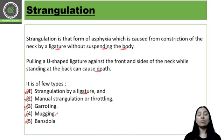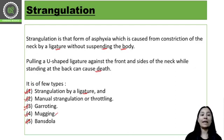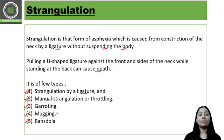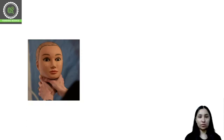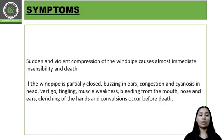The most common types of strangulation are ligature strangulation and throttling, also called manual strangulation. These are the types most commonly seen.